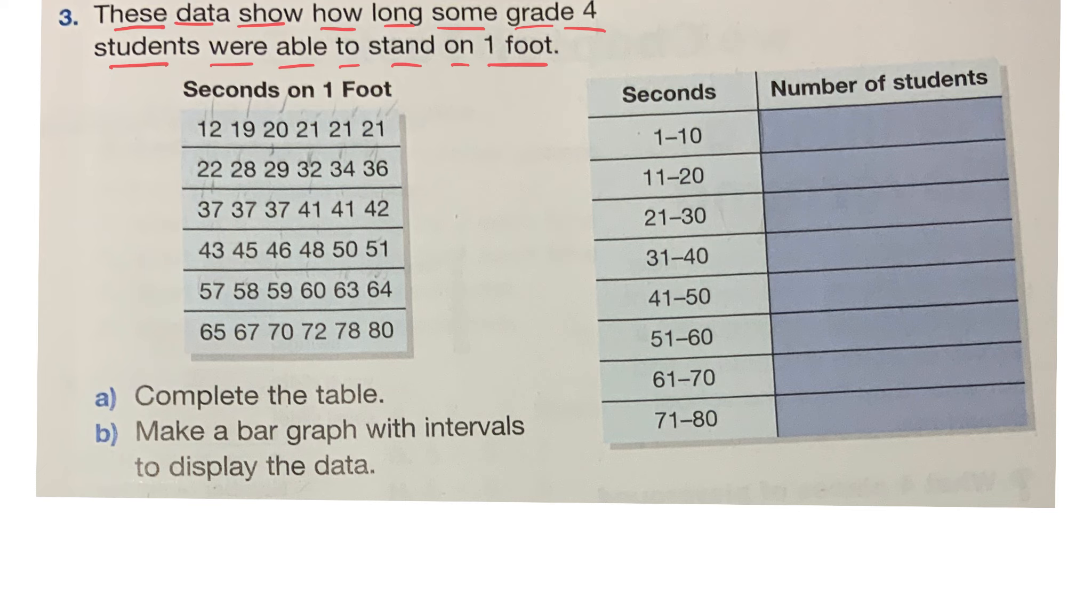Let's read the question. These data show how long some grade four students were able to stand on one foot. So what information are we given here? Grade four students, seconds on one foot. So these numbers are representing how many seconds they stood on one foot, right?